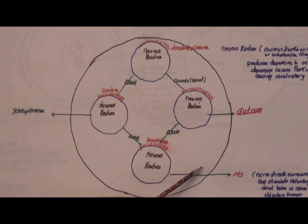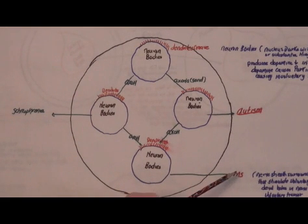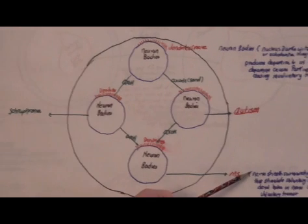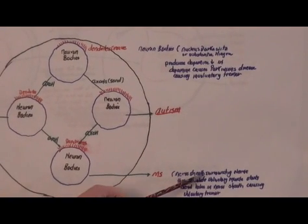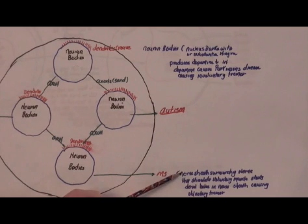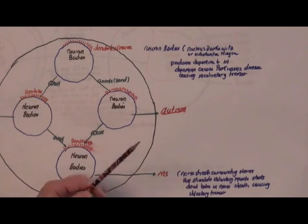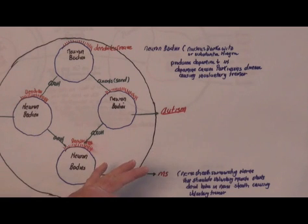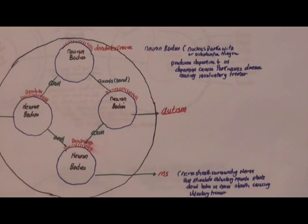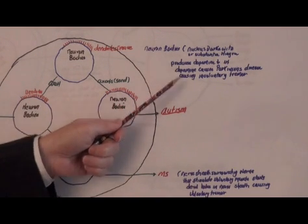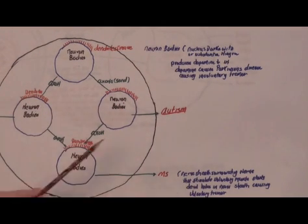This neuron body is the neuron body for MS and MS what it is is the nerve sheath surrounding the nerve that stimulate the voluntary muscle develops little holes in it thereby creating a tremor, only in this case it's a voluntary tremor. So you can tell there's this one's an involuntary tremor and this one's a voluntary tremor.